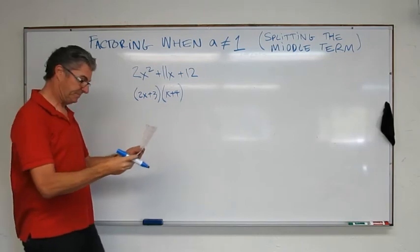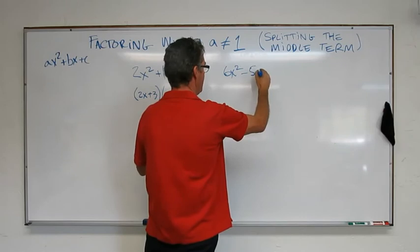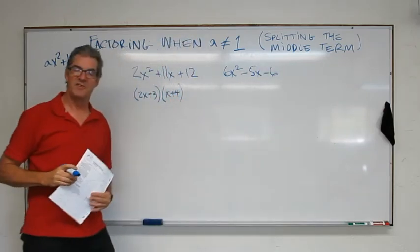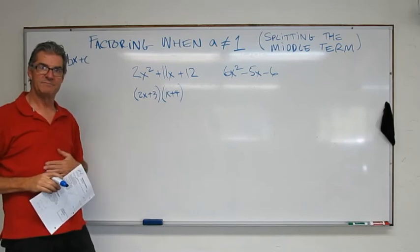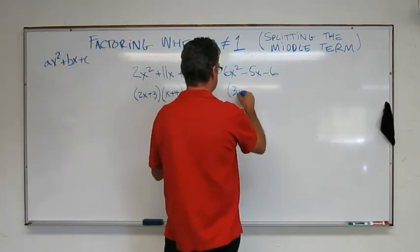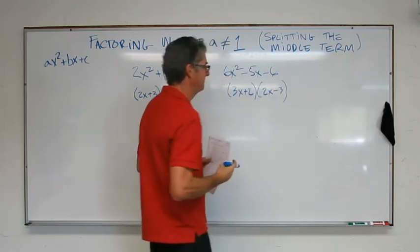Second example. 6x squared minus 5x minus 6. Pause the video. Give that one a shot. Okay. Your answer is 3x plus 2 and 2x minus 3. Okay.